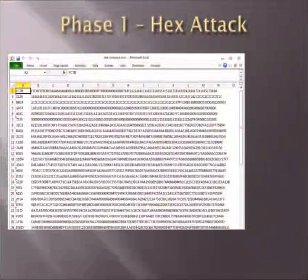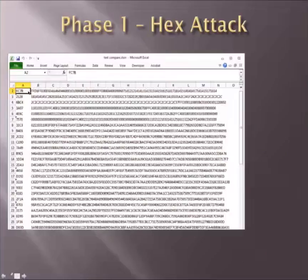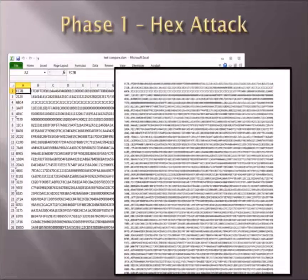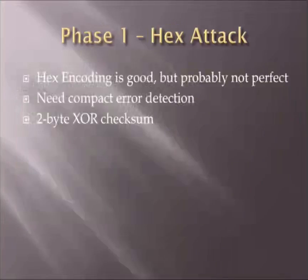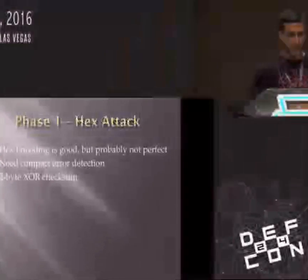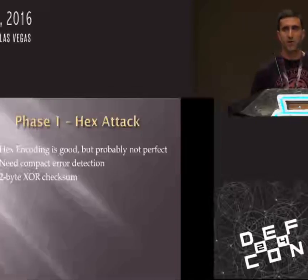The hex attack script generates two columns: a data column and a two-byte exclusive-OR checksum column. You export those as a CSV, print them, scan them at work, and transfer your data into your closed network — as long as the secretary's not watching you scan. I realized hex encoding wouldn't be perfect, so I built a compact exclusive-OR checksum. Every byte given over to checksums is a byte lost in data, and I needed to get as much on a page as possible. I was taking a gamble on not having too many collisions, and it worked.